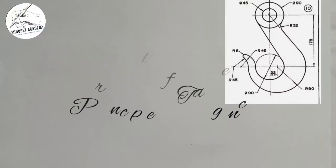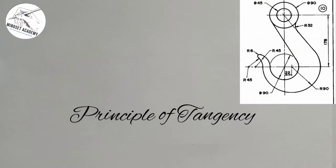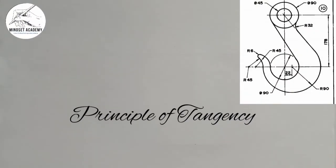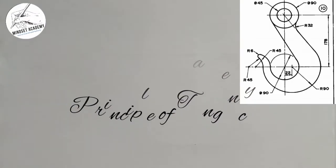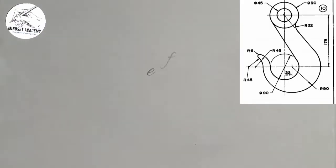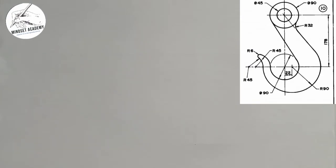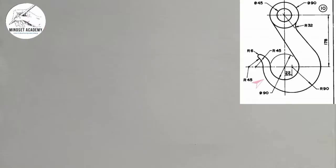Welcome to my channel. In this video we are told to reproduce the figure at the right hand side of the screen, and we are going to be applying the principle of tangency in order to replicate that diagram. The first thing you have to do is look at the figure closely and discover that we have two centers — this center and that center — so let me name them center A and center P.